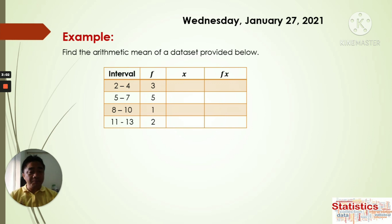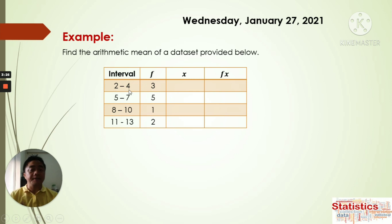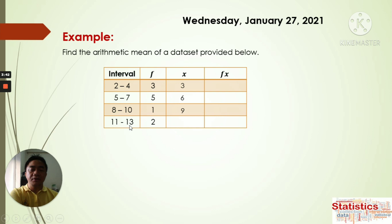We're going to find the arithmetic mean. For the arithmetic mean, we need the sum of the product of f and x. So we have the frequency f, and x is the midpoint of the interval — the mid-interval. From 2 to 4, the midpoint is 3. For 5 to 7, the midpoint is 6. For 8 to 10, we get 9. And for 11 to 13, we get 12.